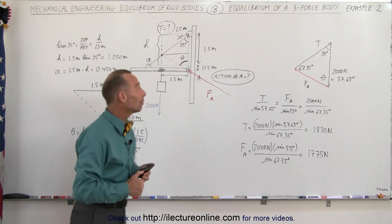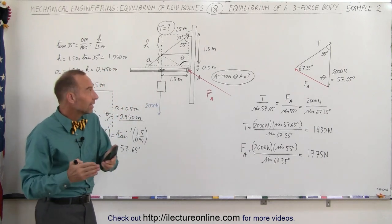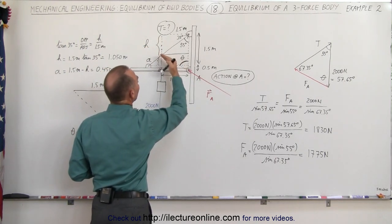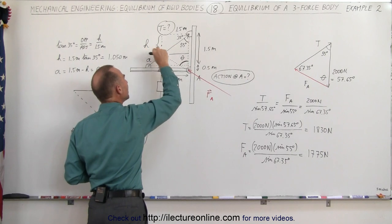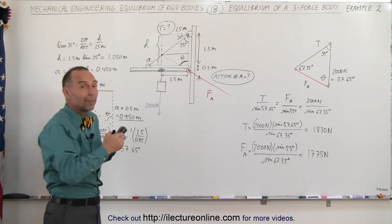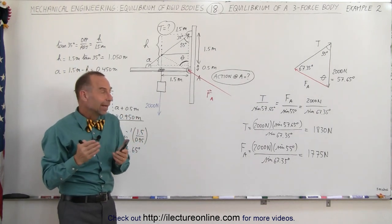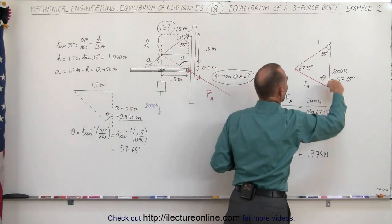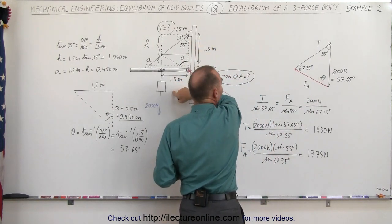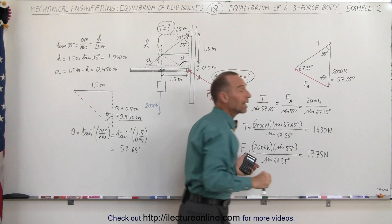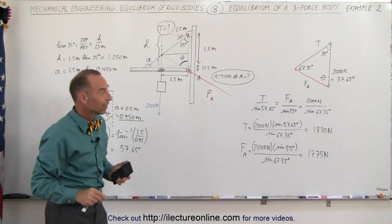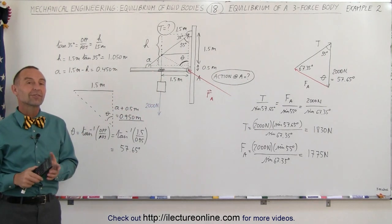And that's how we do that. We use the principle that when a three-force body is in equilibrium, all the lines of action of each force — the weight, the force at A, and the tension — all meet at the same place. Then, drawing vectors representing the three forces in terms of direction and magnitude, they form a triangle. I knew one of the angles — 55 degrees — found a second angle, then easily found the third. Once you have the three angles, use the law of sines to find the magnitudes of the other two forces. That's how we deal with a three-force body system.